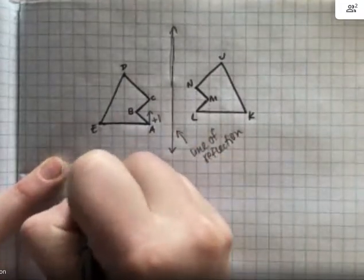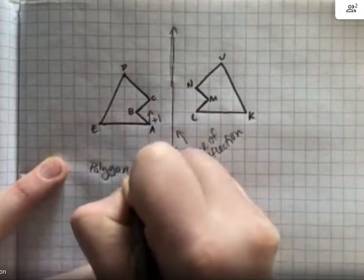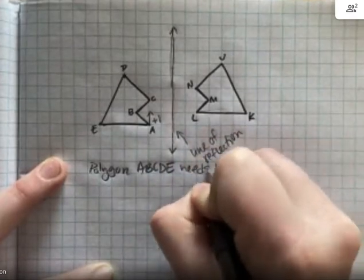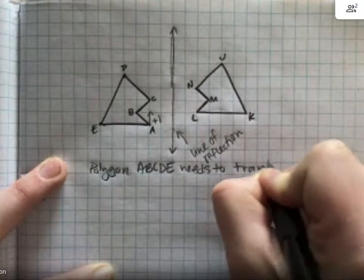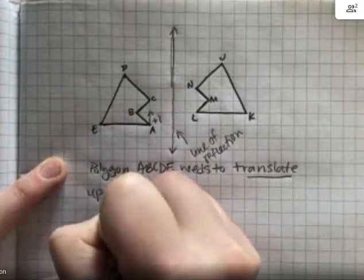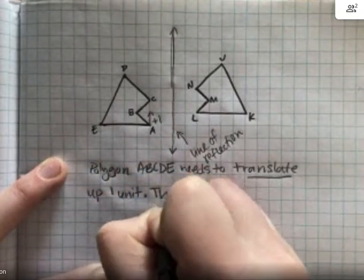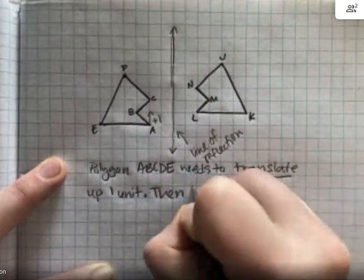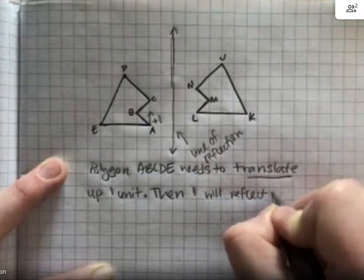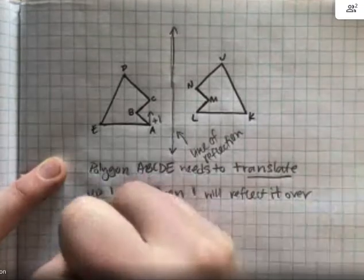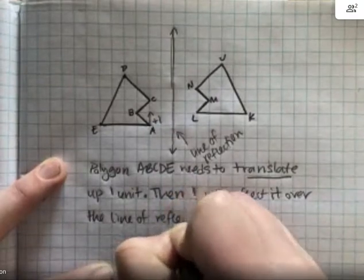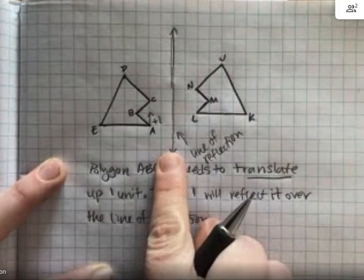I'm going to say polygon A, B, C, D, E needs to translate, which means I'm sliding it, translate up one unit, then I will reflect it over the line of reflection. So I've already drawn my line of reflection so I can see that.